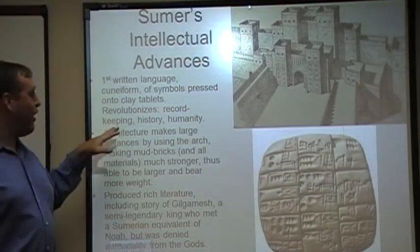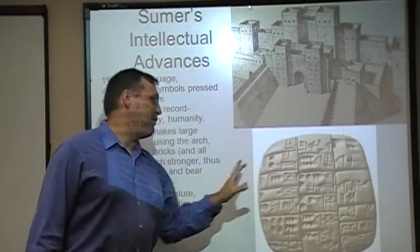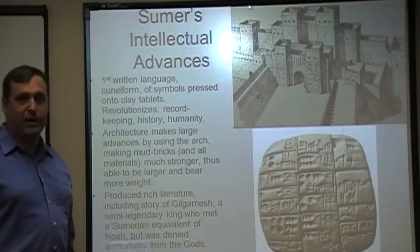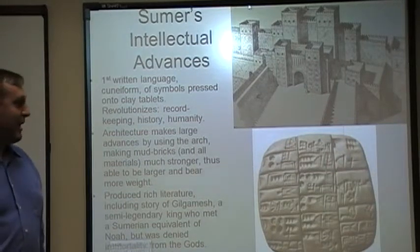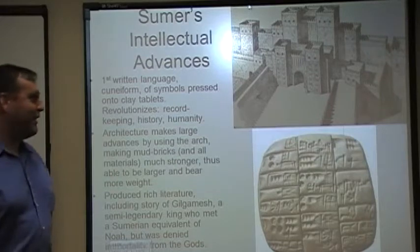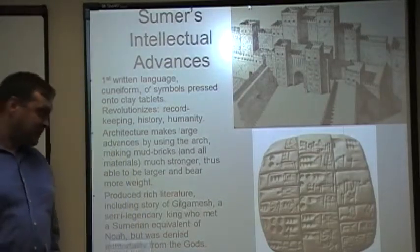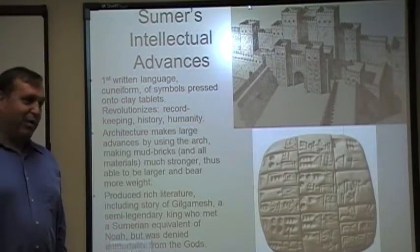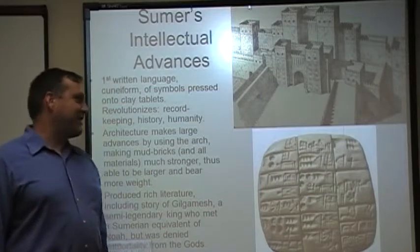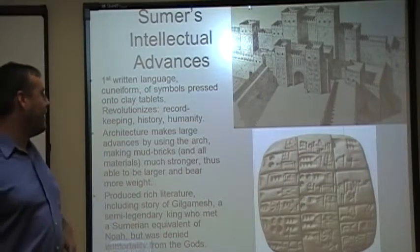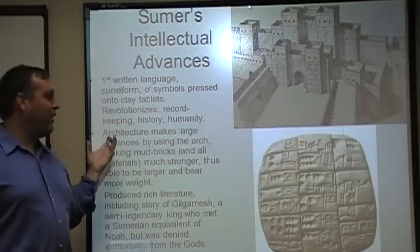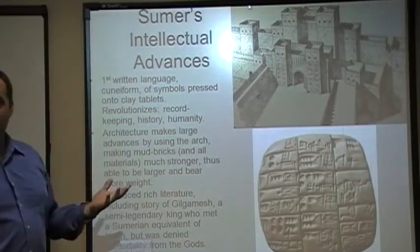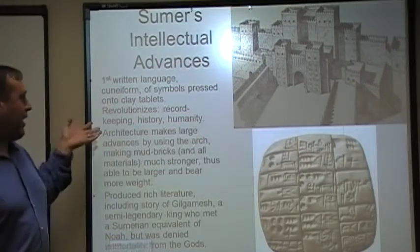Cuneiform starts out as clay tablets where you use the ends of reeds and various other shapes to press symbols into the clay tablets, which are then fired to give you a nice permanent record. It revolutionizes record-keeping first. When we've cracked the code for cuneiform, if you read through most of them — especially the earliest ones — they read sort of like receipts you get at the grocery store or from the accountant's office: we have this many cows over here, this many tons of grain over there. It's just a tally of what we have and what we're doing. These guys are dealing with numbers too big to keep in your head — they've got too much stuff — so you've got to have some way to record it.